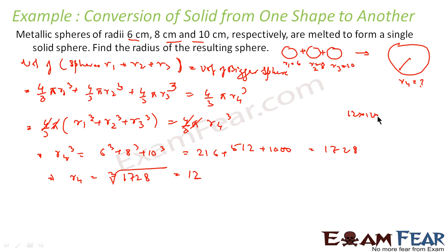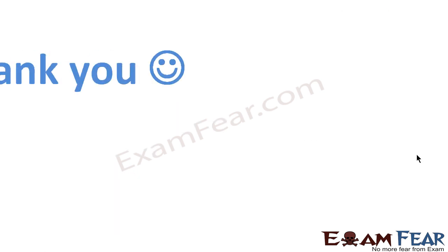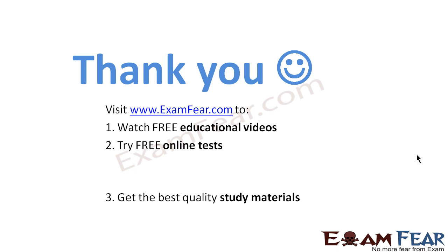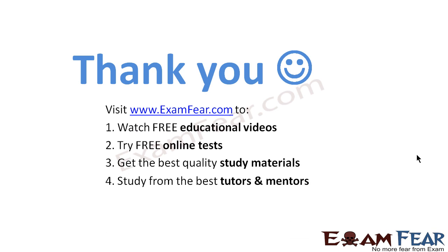So r equals the cube root of 1728, which is 12. This is because 12 × 12 × 12 equals 1728. So the radius of the resulting bigger sphere is 12 centimeters. Very simple — you take all the cubed radii, find the volumes, add them, and that equals the volume of the bigger sphere. Thank you. Visit examfear.com to watch free educational videos, try free online tests, and get the best quality study materials.